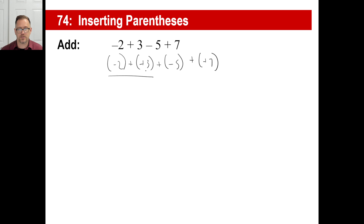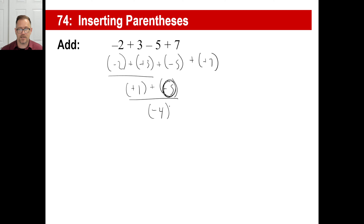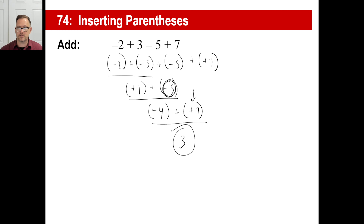Negative two plus positive three — different signs — we subtract the absolute values. Three minus two is one. Should it be negative one or positive one? That's farther away from zero — it's a positive one. Positive one plus negative five — these are opposites — so you take the absolute values and subtract them. Five minus one is four. Should it be negative four or positive four? That's farther away from zero — that's a negative four. Negative four plus positive seven — different signs — subtract the absolute values. Seven minus four is three — should it be positive three or negative three? That's farther away from zero — that's a positive. So yeah, that's a positive three.